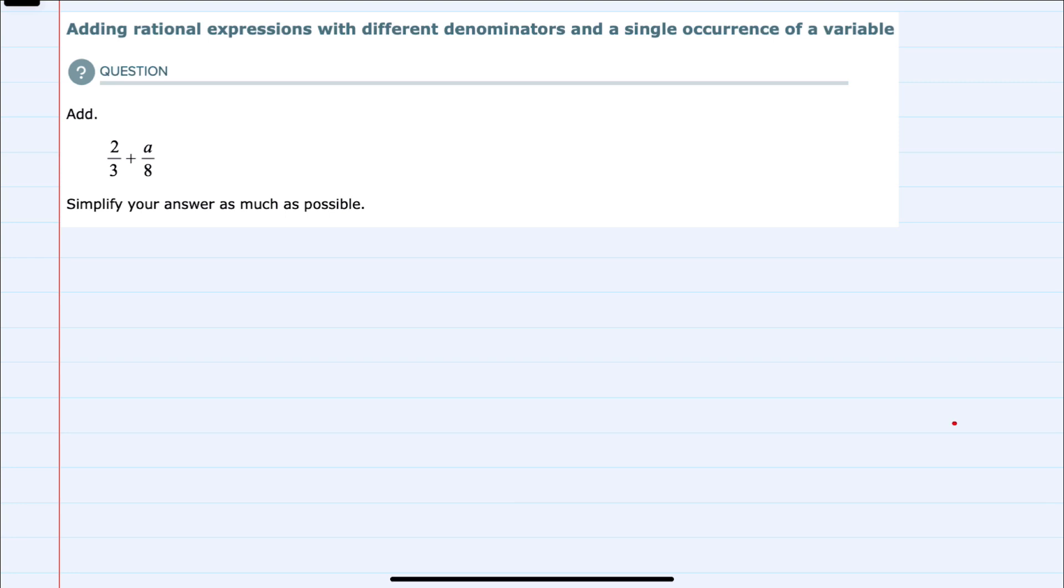So we're asked to add these two fractions and the first thing that we notice is that we do not have a common denominator. So part of doing this will be finding a common denominator.